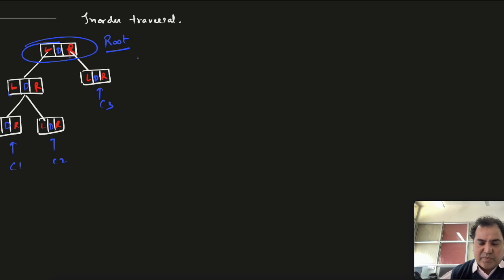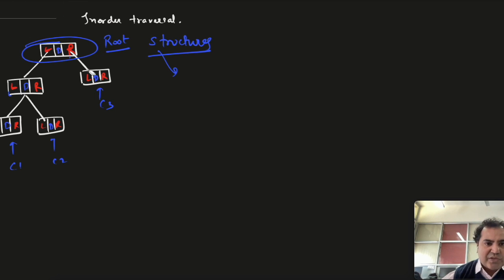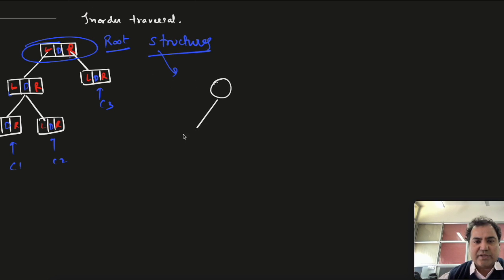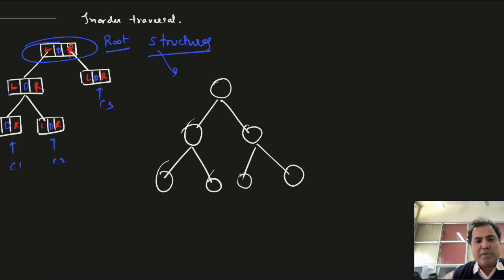The basic implementation we are going to do will be with the help of structures. In today's class we'll see how we can traverse a tree in order. Casually, while programming, we have to implement it with two pointers — left and right pointer — and the data in the middle part.